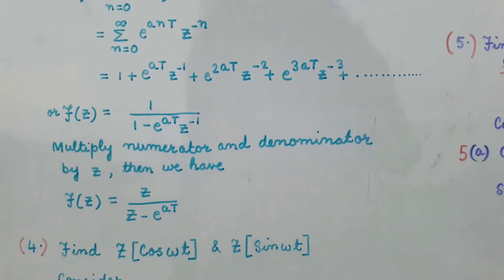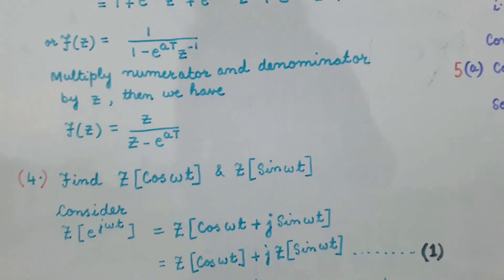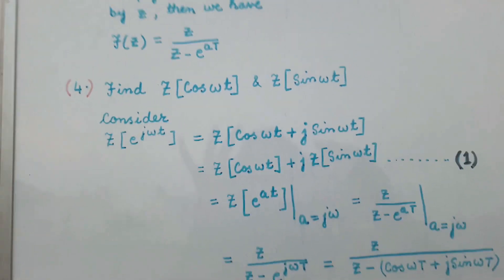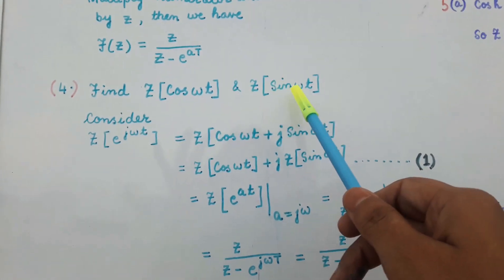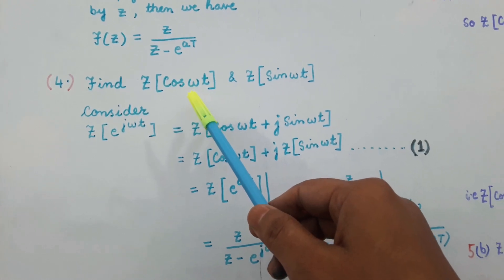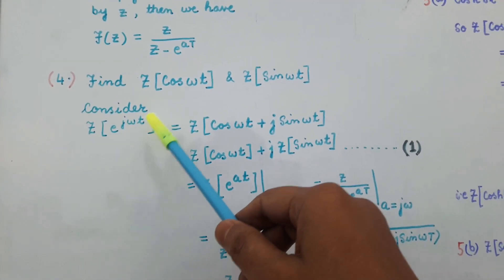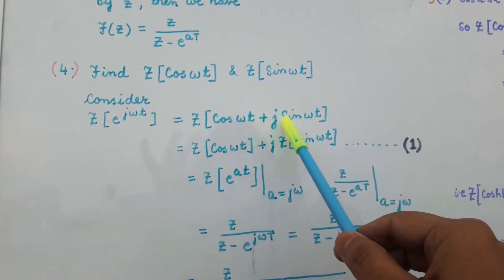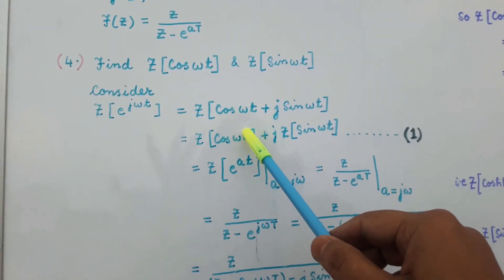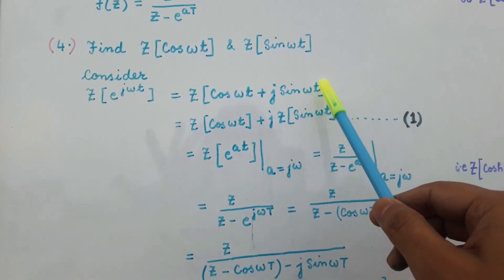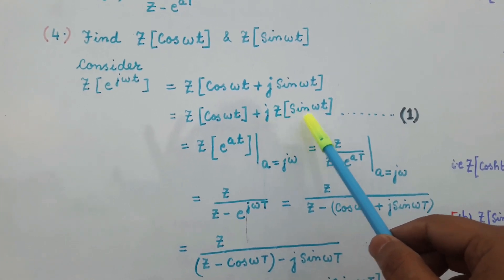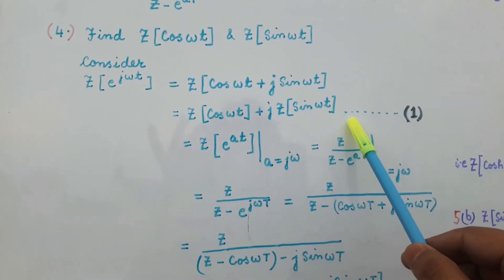Now let us find out the Z transform of cos(ωt) and sin(ωt). First, we will find the Z transform of e^(jωt). We know that e^(jωt) can be written as cos(ωt) + j·sin(ωt). So the Z transform of e^(jωt) equals the Z transform of cos(ωt) plus j times the Z transform of sin(ωt), from the linearity property of Z transformation.